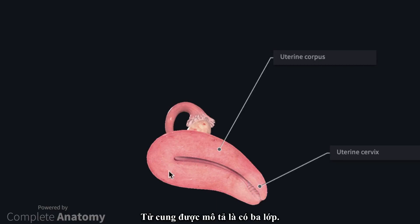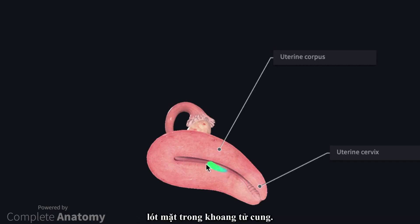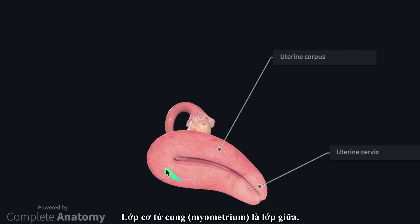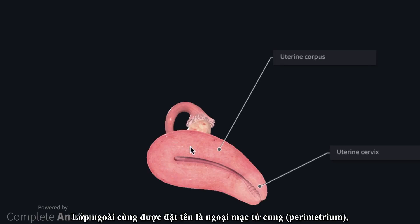The uterus is described as having three layers: an inner endometrium, which lines the uterine cavity. This is a highly vascular glandular layer that is subject to great change throughout the menstrual cycle. The myometrium is the middle layer, which is primarily muscular tissue with a small proportion of fibrous tissue. The outer layer is named the perimetrium, which is formed by the overlying peritoneum, however this is not included in this model at the moment.